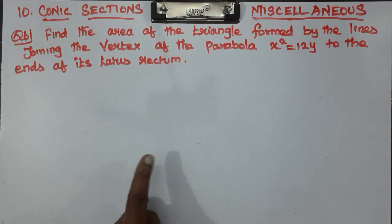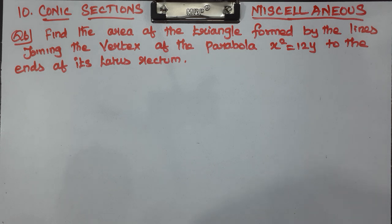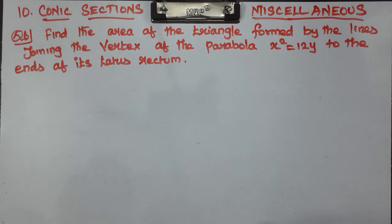We will find the area of the triangle. In the area of the triangle, we have 3 points: A, B, C. The coordinates are x1, y1; x2, y2; x3, y3. The triangle area formula is: 1/2 times the modulus of x1(y2 − y3) + x2(y3 − y1) + x3(y1 − y2).